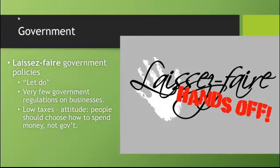This allows businesses to create incredible profits, but it also creates some problems that we'll look at a little bit later. There were also low taxes. The attitude of this time, based on individualism and social Darwinism, is that people should be able to choose how to spend their money and how to live their life — not the government. That attitude will change in American history; we'll talk about the New Deal, progressivism, and how Americans shift away from the laissez-faire attitude.